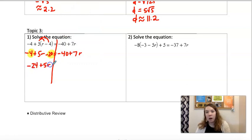So negative 4 and negative 20 is negative 24. And then we want to get our r's on the same side. You can choose which one you want to move. But I always like to move the smaller one. It keeps things nice and positive. So I'm going to subtract 5r.